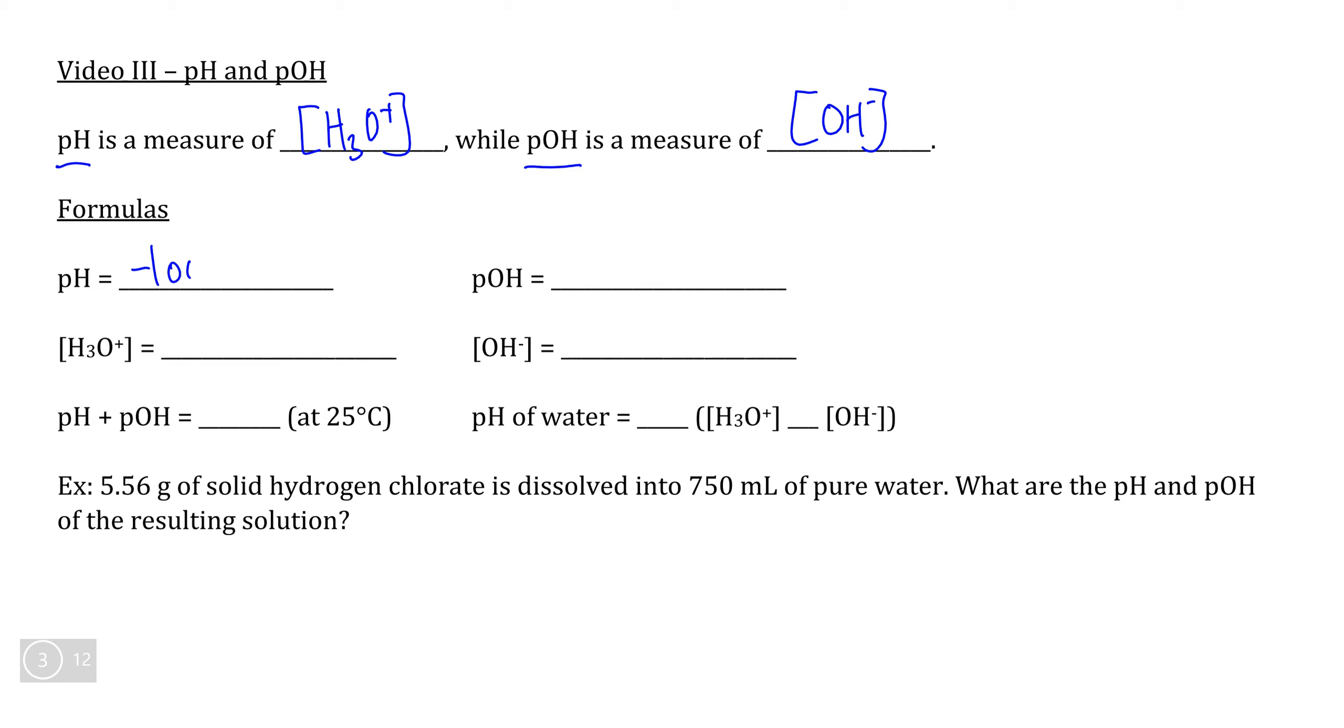To calculate both pH or pOH, simply type negative log, meaning negative logarithm, a specific operation on the calculator. Then input the concentration of H3O+ if you want to calculate pH, or the concentration of OH- if you want to calculate pOH. In both cases, it will give you a number between 0 and 14, although negative pH and pOH is possible.